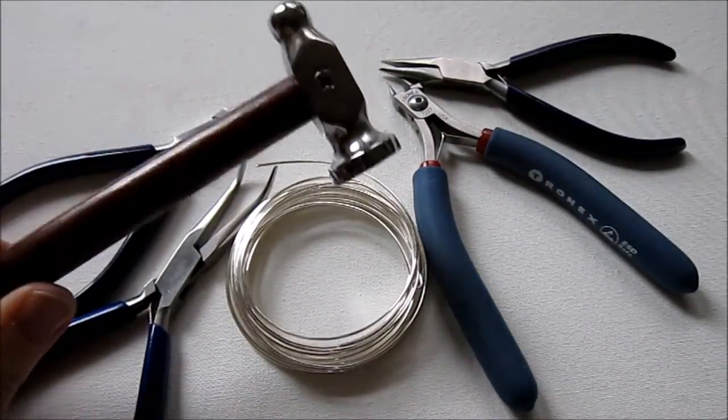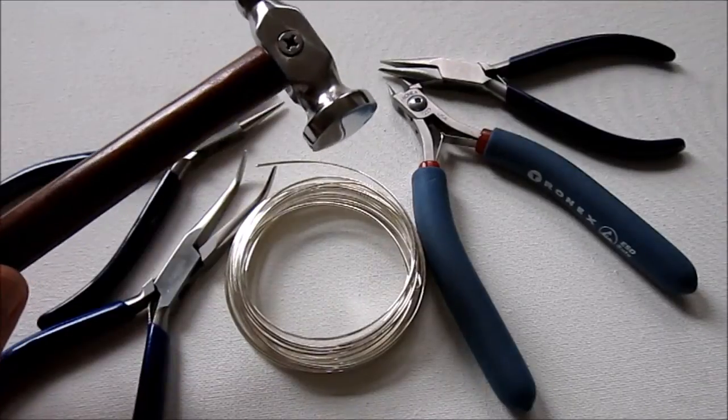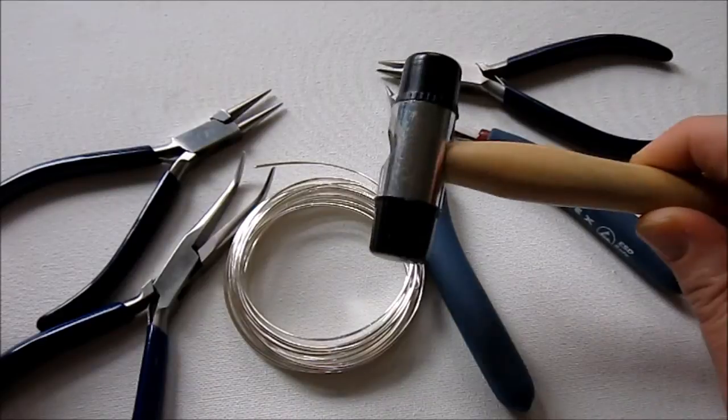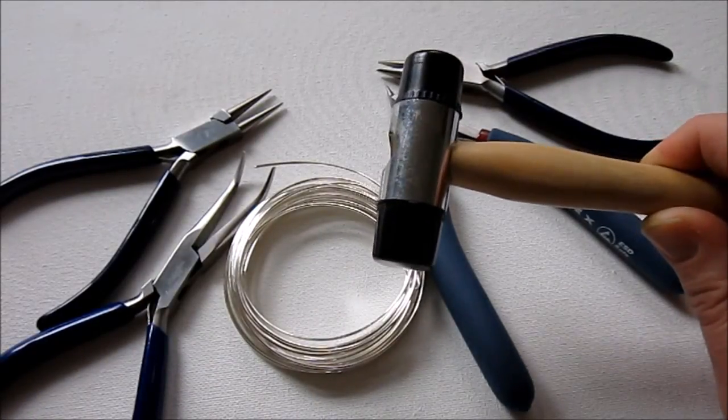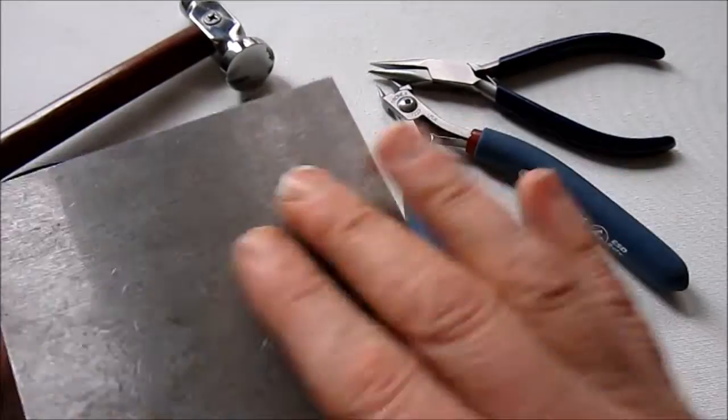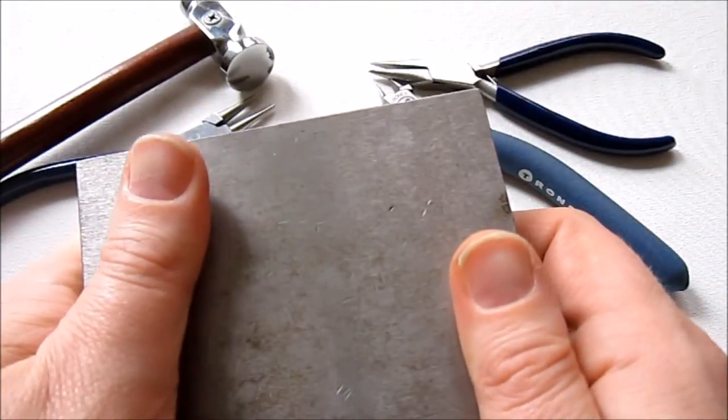You'll need a hammer. I'm going to be using a chasing hammer, which will flatten the clasp. You could instead use a rawhide or nylon hammer, which would just harden the wire and not actually flatten it. Either way is fine, and then you need just like a steel block, anvil, whatever you have in that regard.